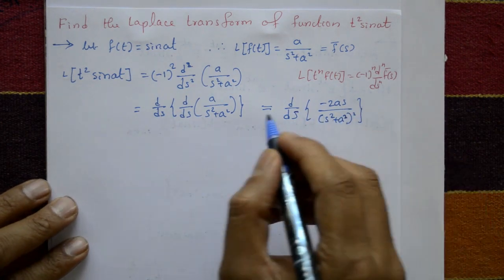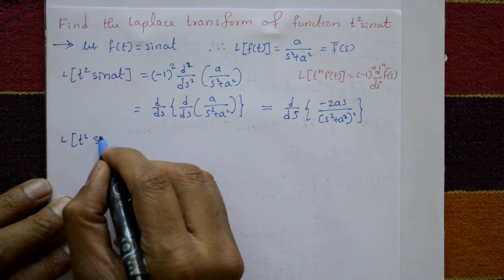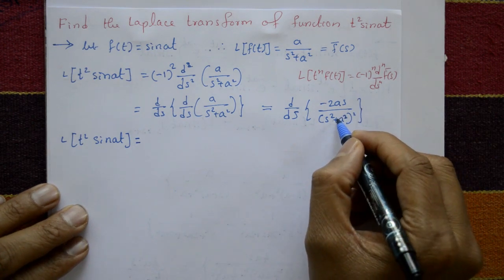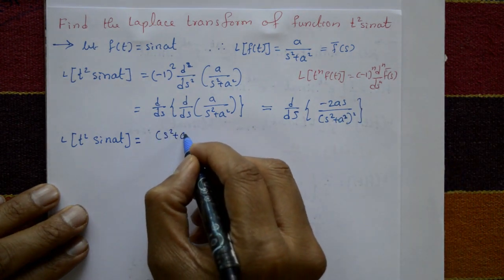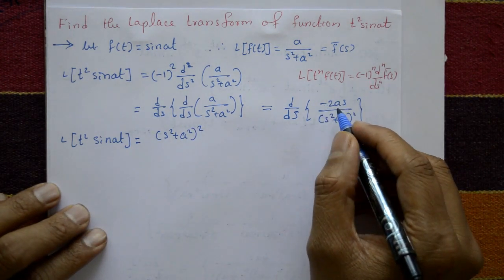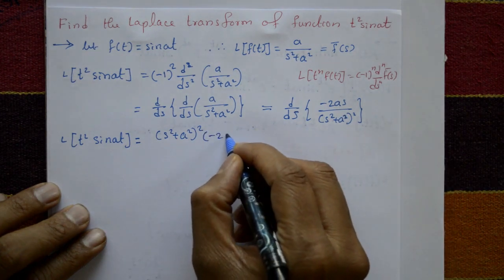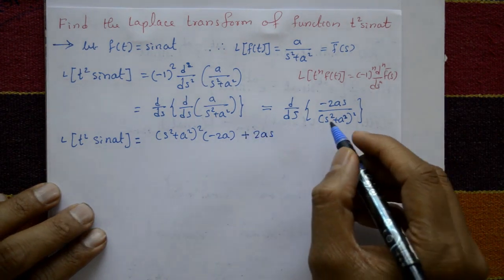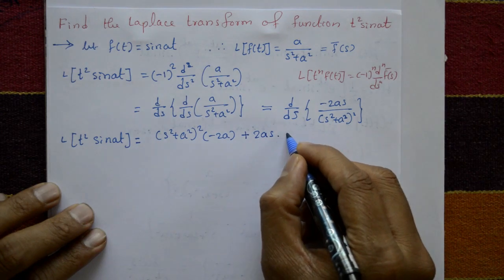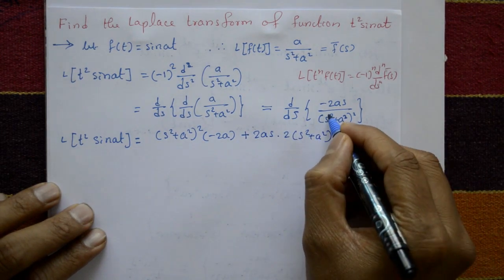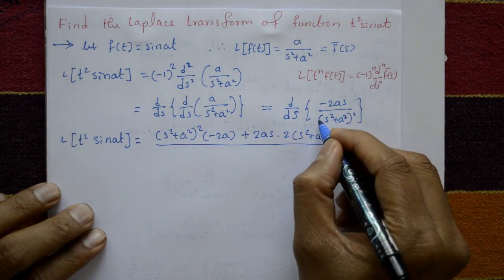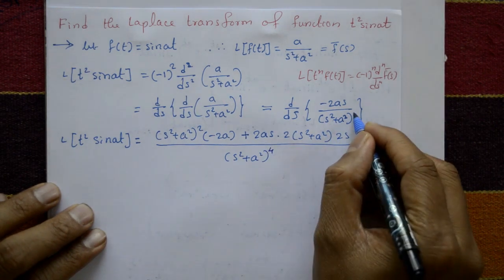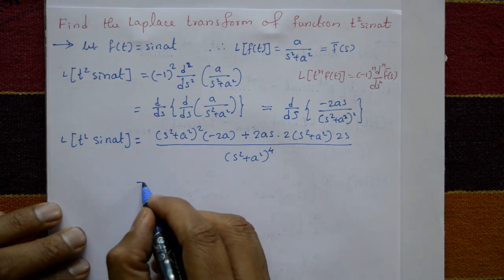The Laplace of t² sin(at), applying the quotient rule again: the numerator involves s² plus a² whole squared times minus 2a, minus minus 2as times 2 times s² plus a² times 2s; the denominator is s² plus a² raised to the fourth power.